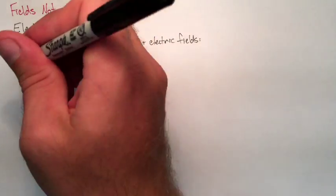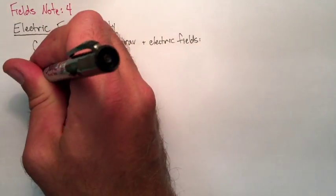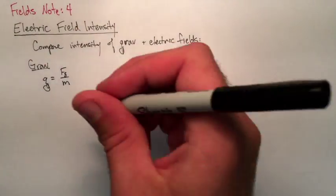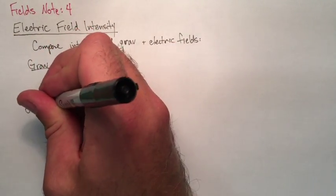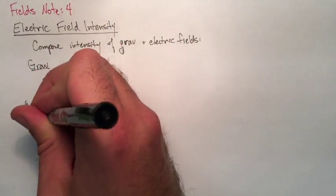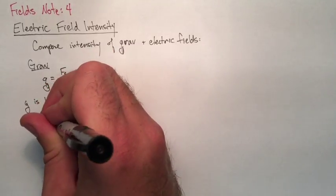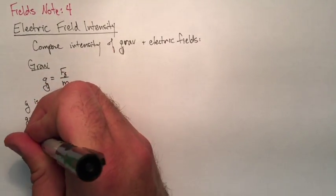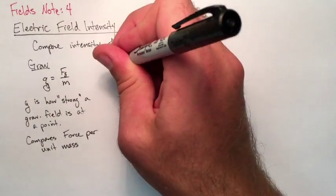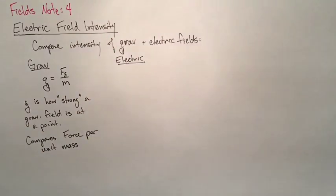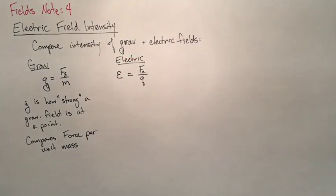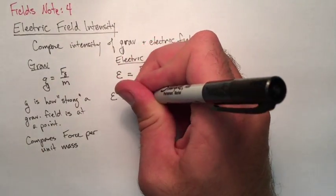Here we're going to compare the intensity of gravitational and electric fields. So for gravity, if we look at acceleration due to gravity, it just comes from Fg equals mg. So gravitational field intensity on Earth is g, it's how strong a gravitational field is at a point. This tells us how quickly an object will accelerate at that point. In this formula, it compares force per unit mass. So gravity, if it goes up and grabs something in an object, it puts a force on every unit of mass in that object.